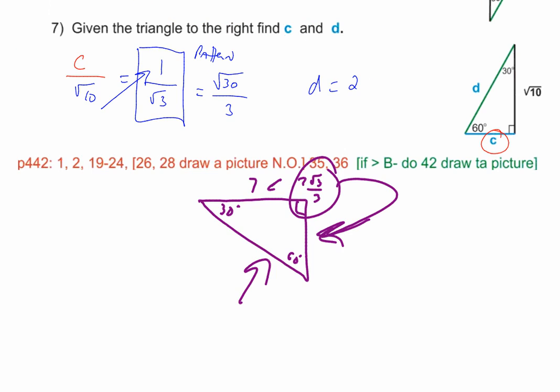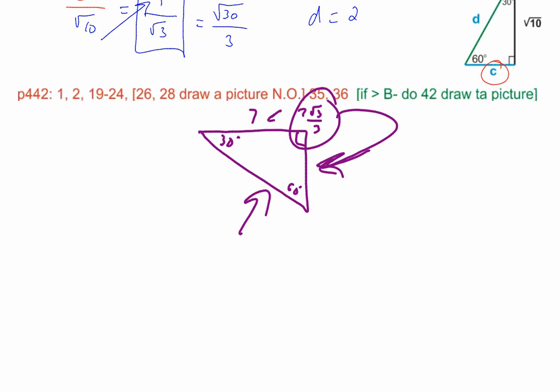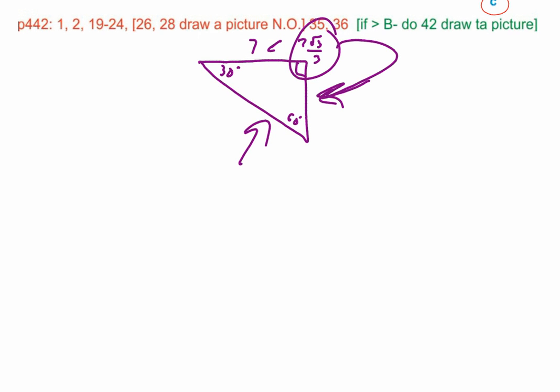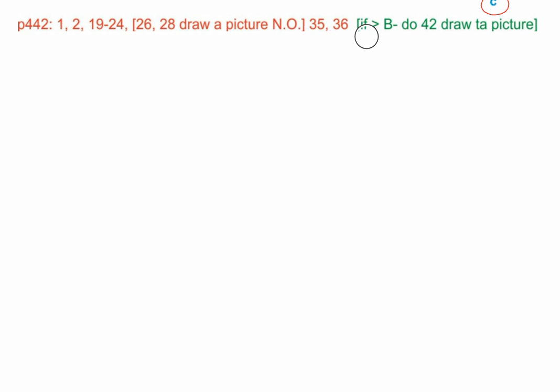Here's a change on the homework: problems 1 and 2 are added. 26 and 28 are added. You need to draw a picture but no original. Change problem 42 to just draw a picture — it does have an A and B part. I'll be available after school if anybody needs any help.